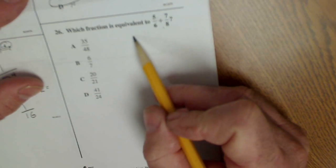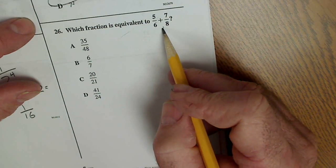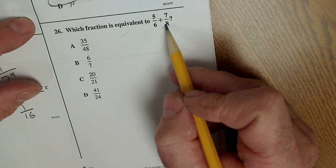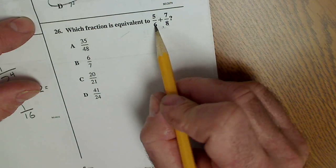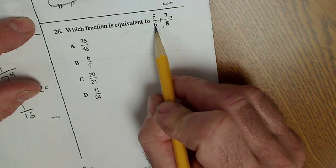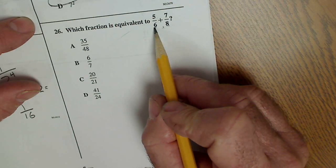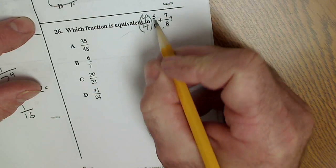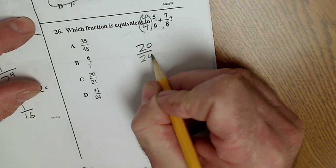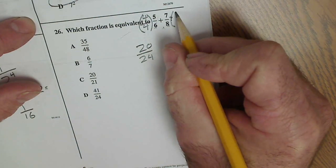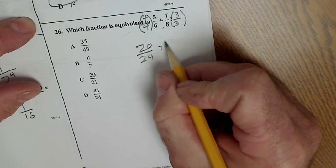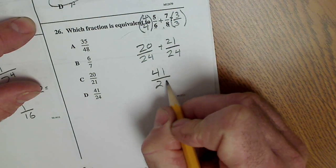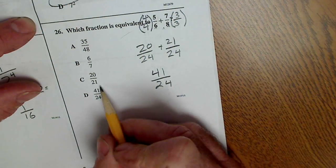Which fraction is equivalent to 5/6 plus 7/8? Well, I know I need a common denominator. Let me go through some numbers. 12 will work for this, but not this. 18 will work, but not for this. 24 will work for both of them. So, I'm going to have to get this to a 24. I have to multiply by a 4 over a 4. That will give me 20 over 24. To get this to a 24, I multiply by a 3 over a 3. That gives me 21 over 24. I add across the top to get 41 over 24. I keep that common denominator. There's my answer.